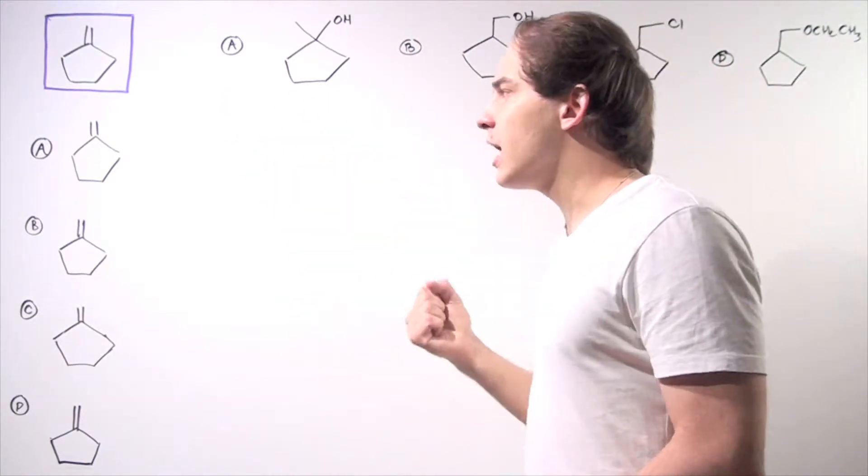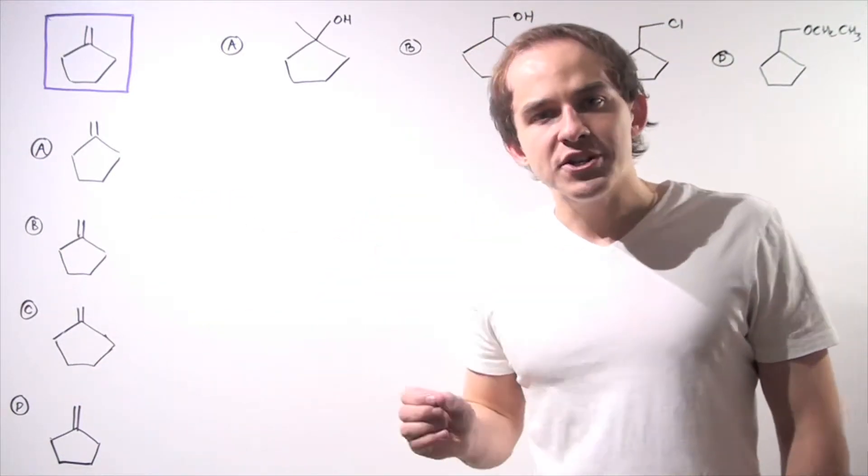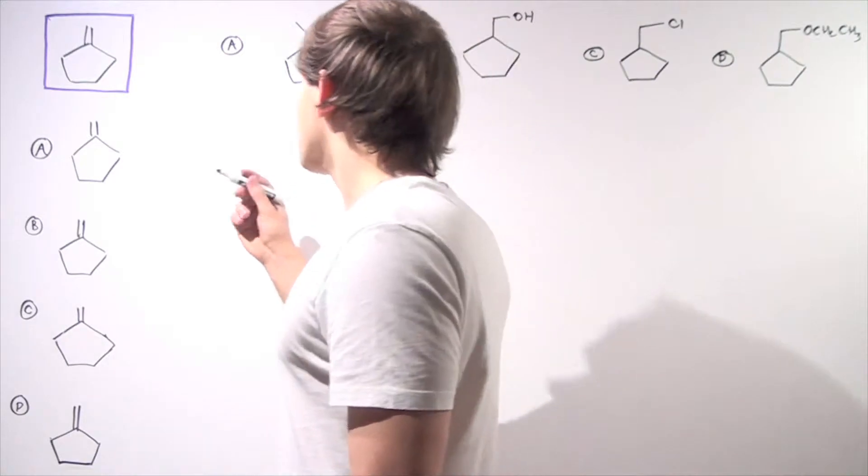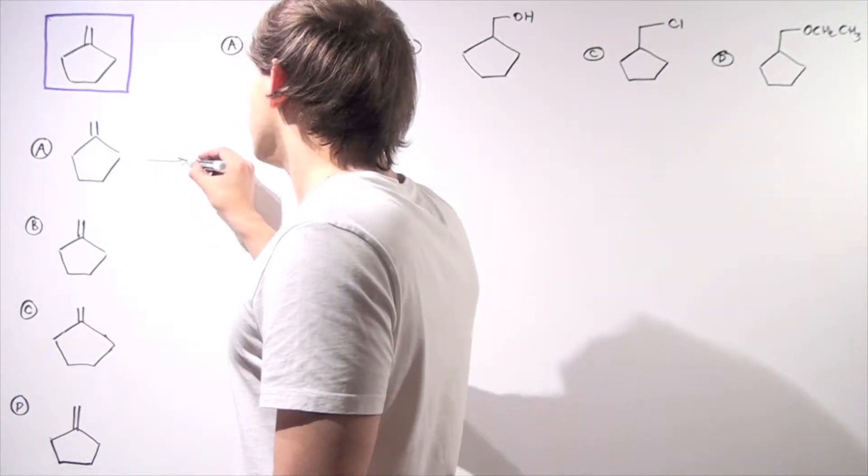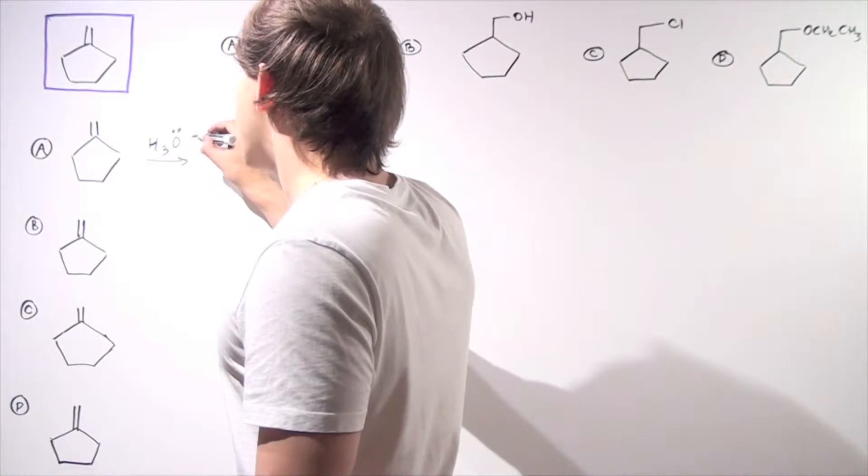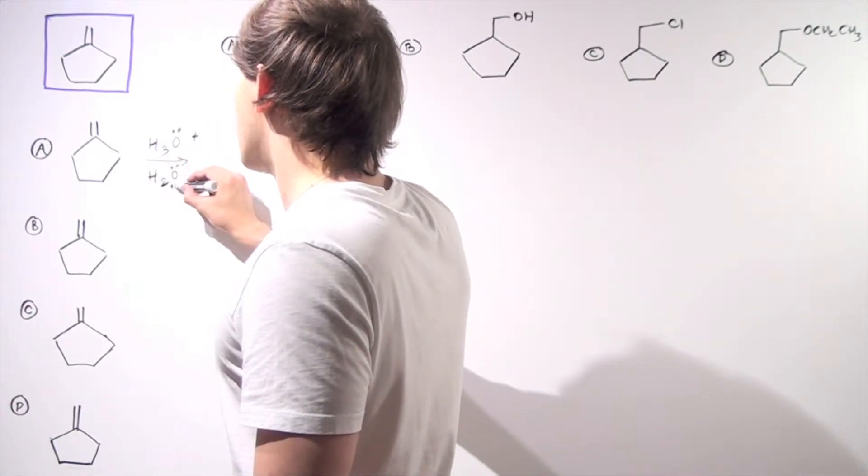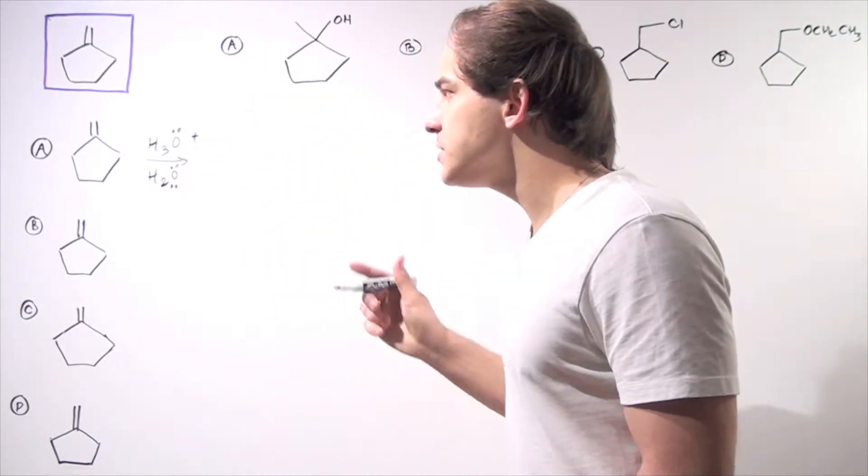To produce a Markovnikov product, we simply follow a straightforward hydration reaction using a trace amount of our catalyst, hydronium acid, and place it in a solution of water.